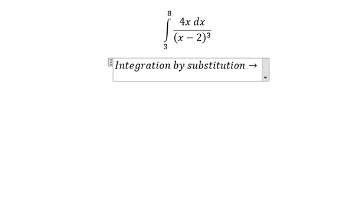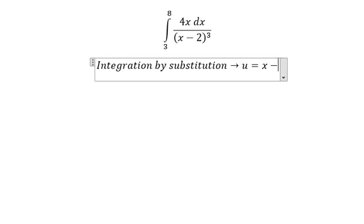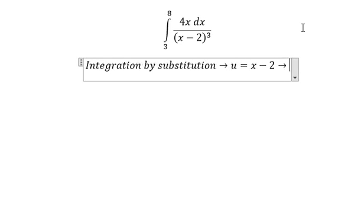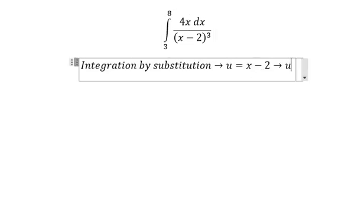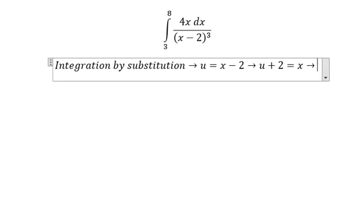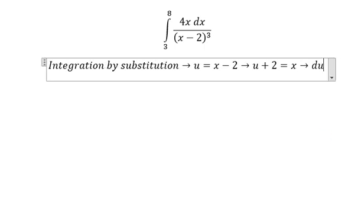So we put u equal to x minus two, because we still have x in here. So we put negative number two on the left. Later, we do the first derivative on both sides.